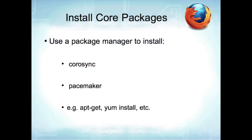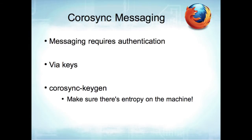For Corosync messaging, you need to know who you're talking to and it requires authentication. There are two ways to do messaging: broadcast or multicast. Either way you need to make sure the message gets to the right recipient. You do this via keys, using the 'corosync-keygen' program. After downloading Corosync, the first thing you want to do is generate some keys — make sure there's entropy on the machine, so run a big tar command while you're doing it.